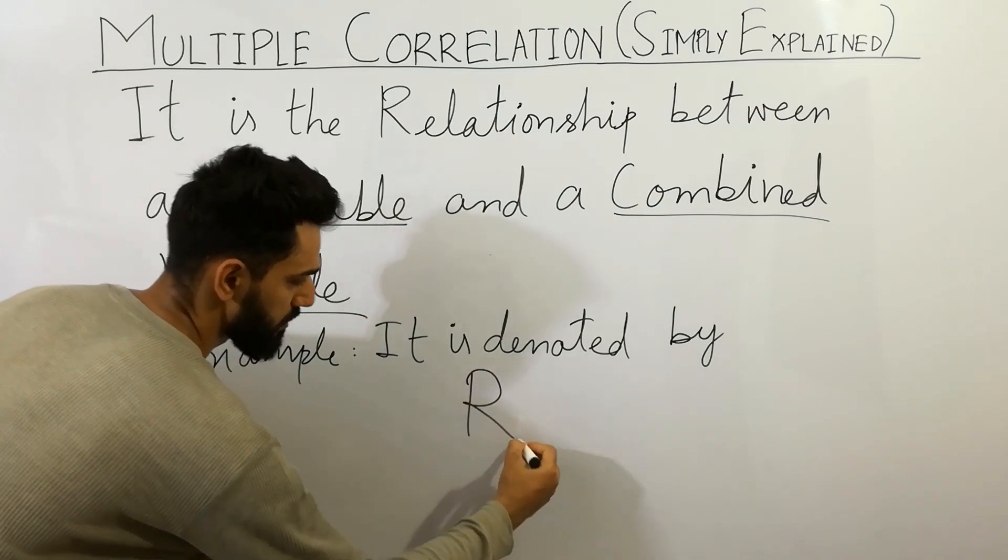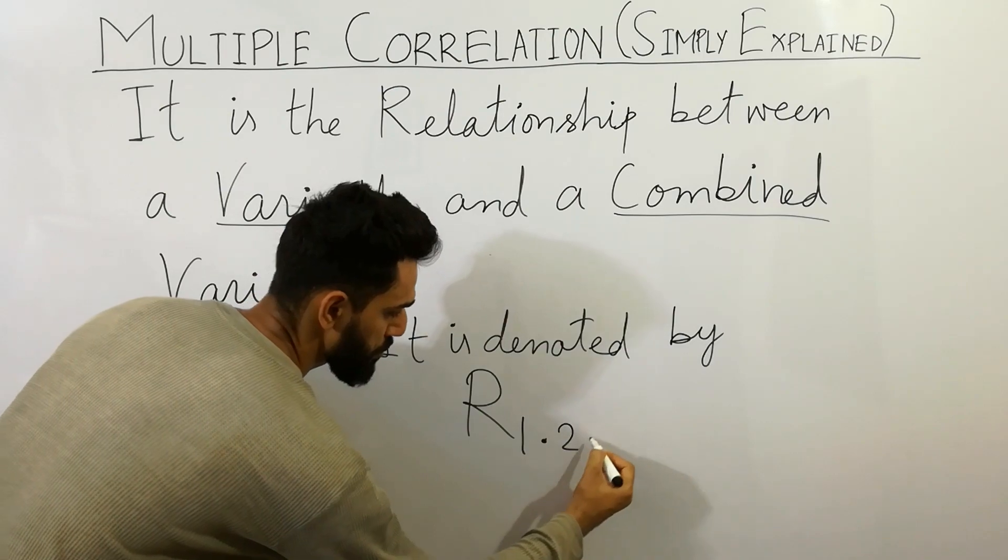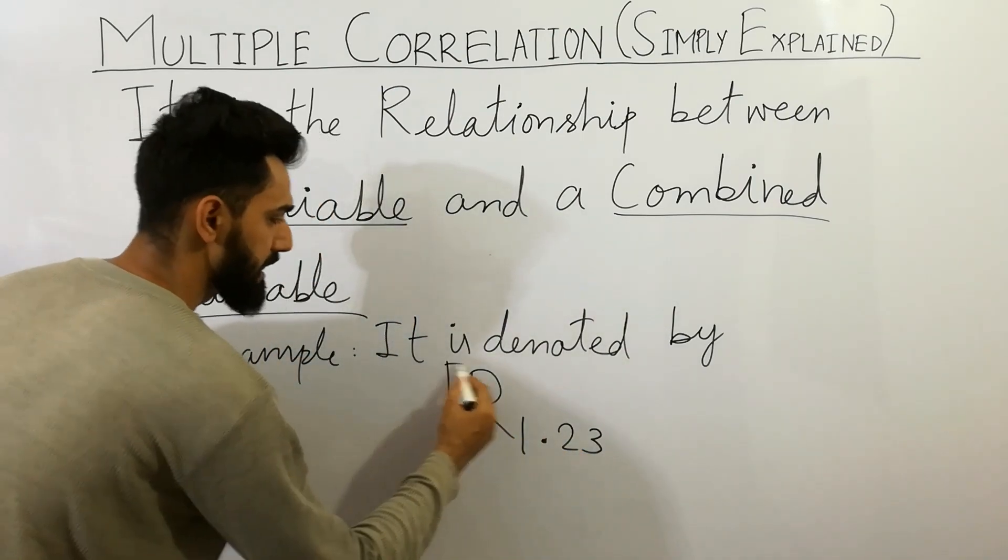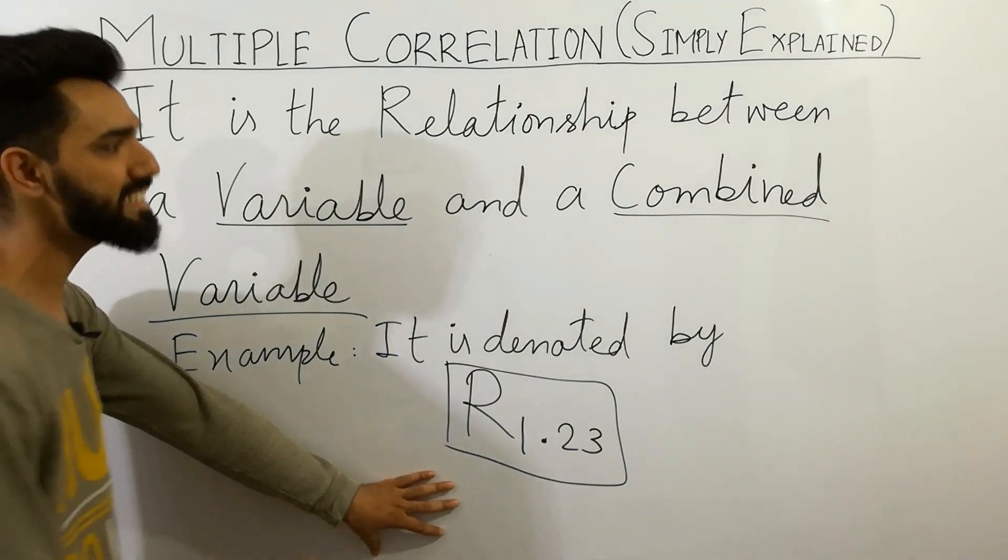one point two three. It is always denoted by capital R one point two three.